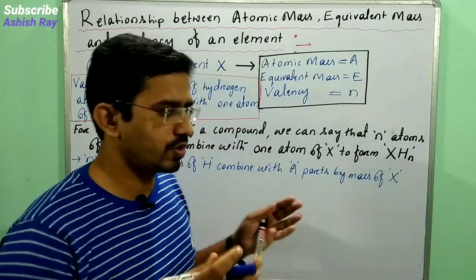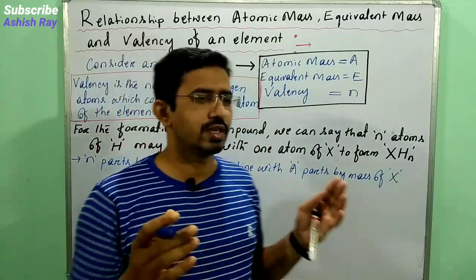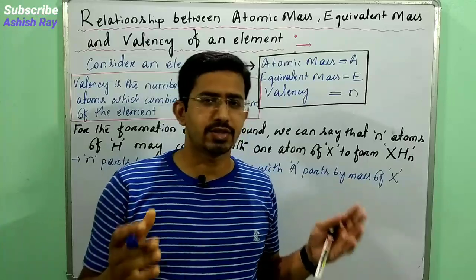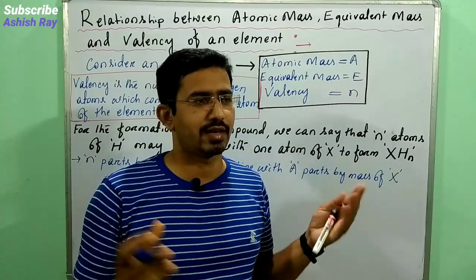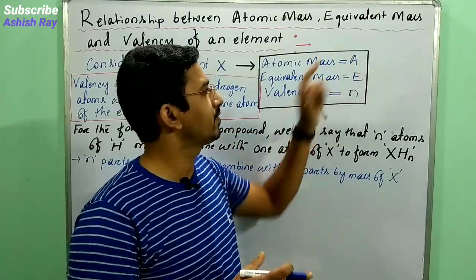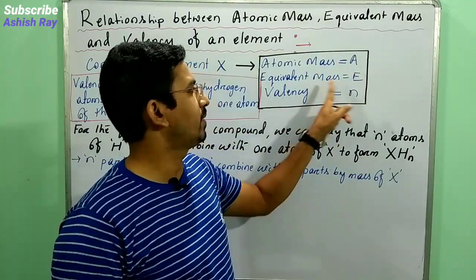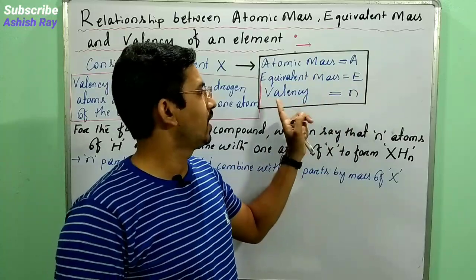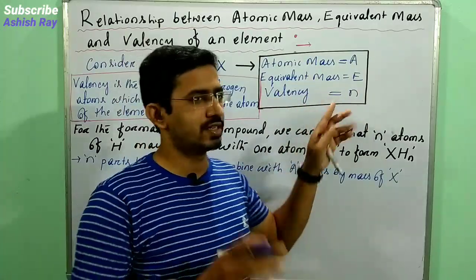So suppose we consider an element X, where its atomic mass is A, equivalent mass is E, and valency is N.